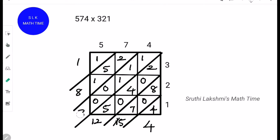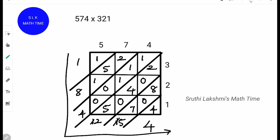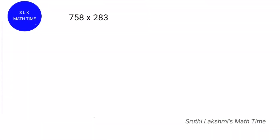Since 11 plus 1 is 12, and 12 is a 2-digit number, we carry this 1 to this 3. So 3 plus 1 is 4. So this will be our answer: 1, 8, 4, 2, 5, 4. So 574 into 321 is 184254.